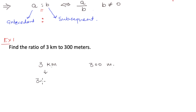So we know that one kilometer is equal to one thousand meters. So three kilometers can be rewritten as three thousand meters, and now we can find the ratio of three thousand meters to three hundred meters.